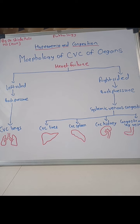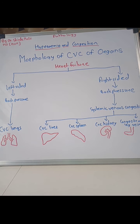In summary, we have studied what is hyperemia, what is congestion, what is active hyperemia, what is passive hyperemia, examples of active hyperemia, and examples of passive hyperemia in the form of local venous congestion and systemic venous congestion. This concludes the topic of hyperemia and congestion.